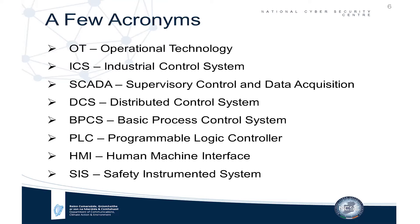DCS, or distributed control system, is a system on a single site — your control system in a plant, oil refinery, or manufacturing site. BPCS, basic process control system, is another word for DCS. PLC, programmable logic controller, controls discrete functions and devices such as valves or actuators and takes data from sensors. HMI, human machine interface, is a graphical interface connecting the operator to the ICS. SIS, safety instrumented system, is designed to bring the plant to a safe state and prevent accidents if things go wrong.